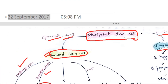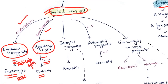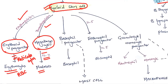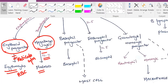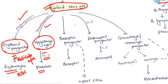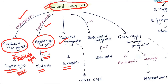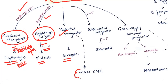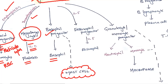Through myeloid stem cell we will get basophil progenitor cells. From this basophil progenitor we get basophils. Basophil progenitor also gives mast cells, which have some immunity function.